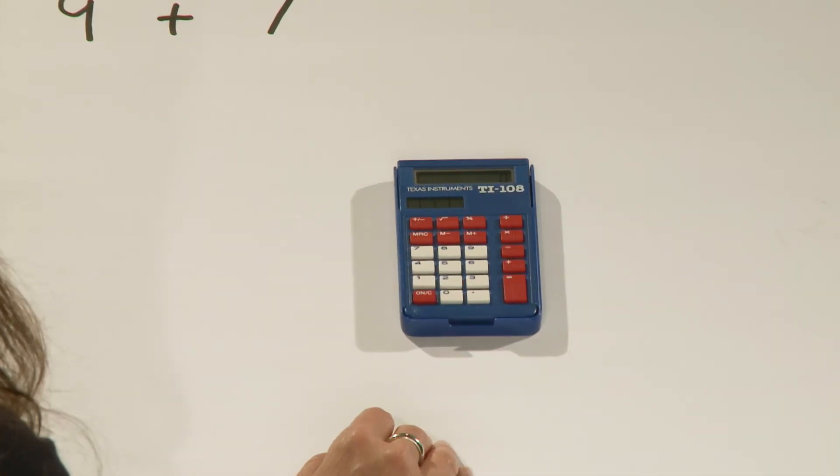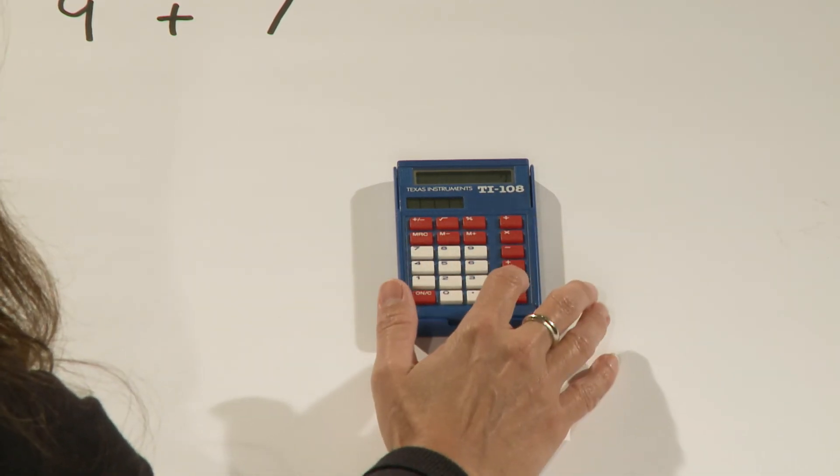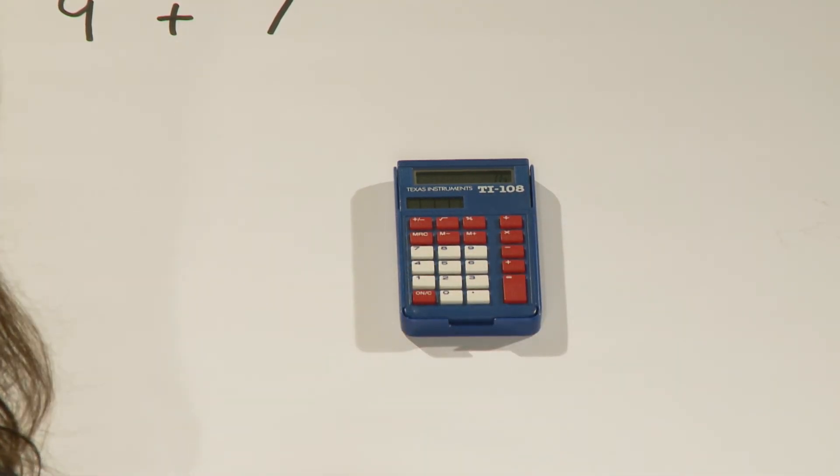We can also use the calculator to make sure that our work is accurate. We can type in the expression 9 plus 7 to find that the sum is 16.